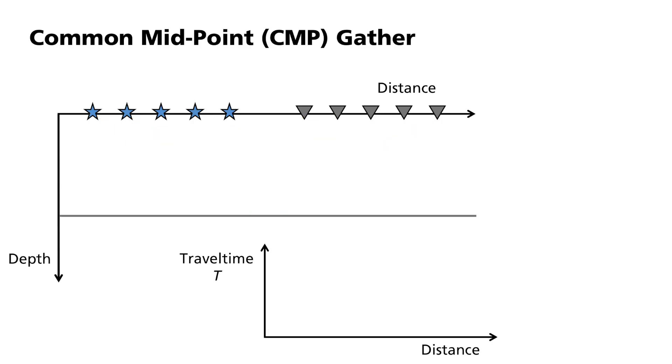For this, I add the travel time curve of the CMP profile to the diagram. Each path from a source to a receiver requires a certain time t, shown here as a point in the travel time diagram.